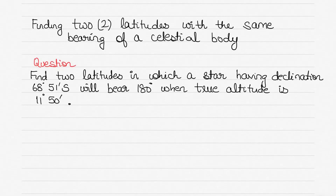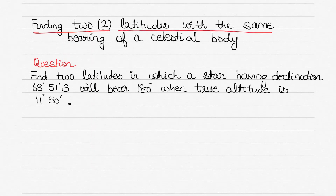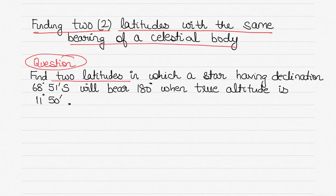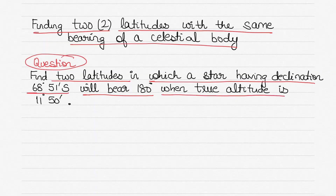In this video, I'll teach you how to use the rational horizon diagram or the PZX triangle to find two latitudes with the same bearing of a celestial body. We'll take the example of a question where you have to find two latitudes in which a star having declination 68 degrees 51 minutes south will bear 180 degrees, or bear due south, when the true altitude of the star is 11 degrees 50 minutes.